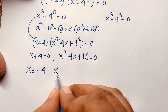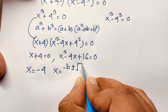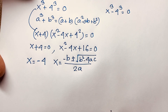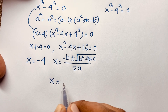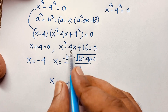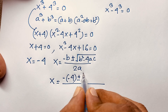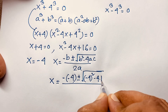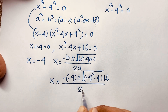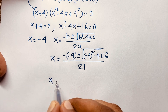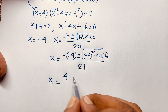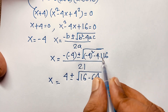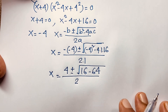The other sub-case is x squared minus 4x plus 16 is equal to 0. So x equals minus b plus or minus square root of b squared minus 4ac, over 2a. Applying this quadratic formula here, b is negative 4, so x equals 4 plus or minus square root of negative 4 whole squared minus 4 times 1 times 16, over 2 times 1.